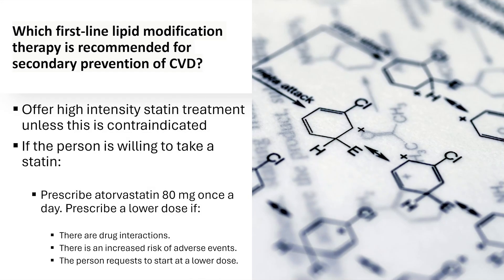The question is which first-line lipid modification therapy is recommended for secondary prevention. Again, you would use a high-intensity statin treatment unless contraindicated — for example, statins are contraindicated in pregnancy or in someone with deranged liver function. For secondary prevention, you would offer a high dose statin, starting with atorvastatin 80 milligram once a day. However, you can start on a lower dose if there are drug interactions, increased risk of side effects, or if the patient requests it before moving to the higher dose.